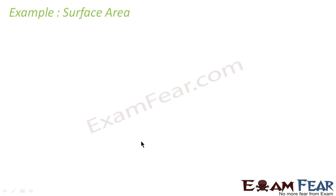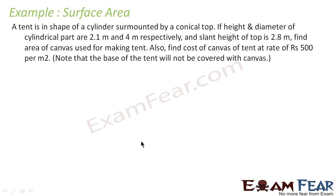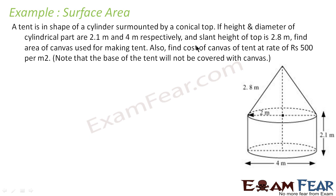Let us take another example. A tent is in the shape of a cylinder surrounded by a conical top. The height and diameter of the cylindrical part are 2.1 m and 4 m respectively, and the slant height of the conical top is 2.8 m. We will draw the figure — this is the typical tent shape, which is a cylinder with a cone on top.